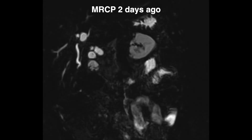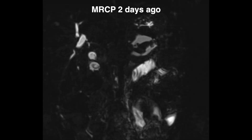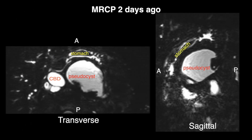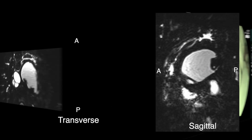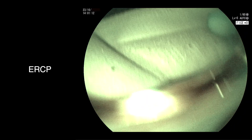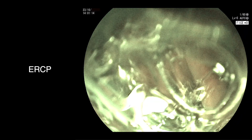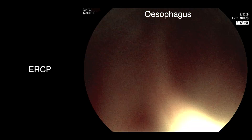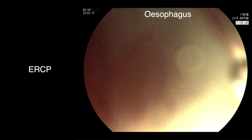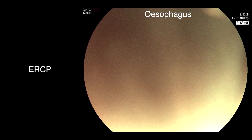There is also a stone in the common hepatic duct. The transverse and sagittal views show the pseudocyst behind the stomach. Hence, an ERCP was performed under general anaesthesia with a view to draining the bile duct.